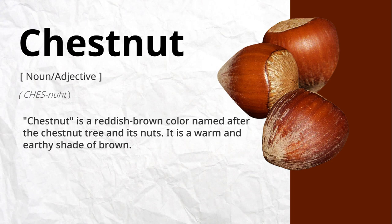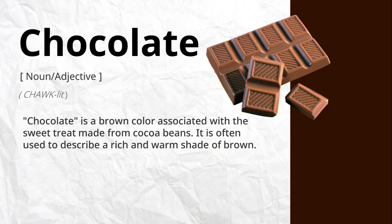Chestnut is a reddish-brown color named after the chestnut tree and its nuts. It is a warm and earthy shade of brown. Chocolate is a brown color associated with the sweet treat made from cocoa beans. It is often used to describe a rich and warm shade of brown.